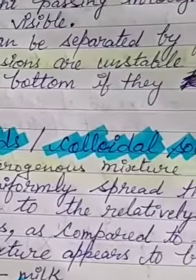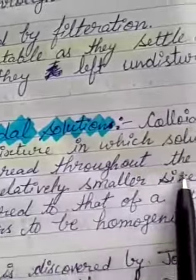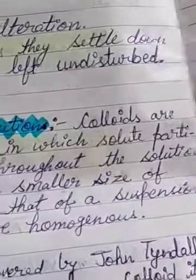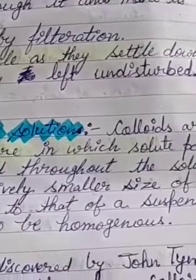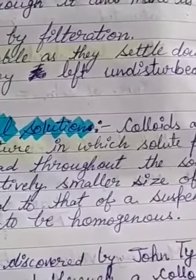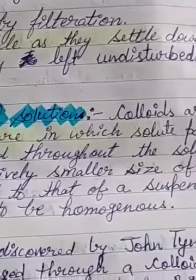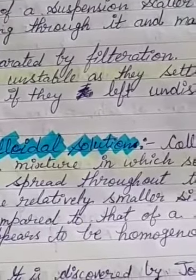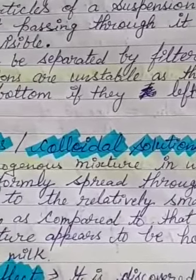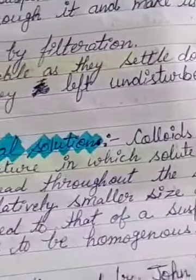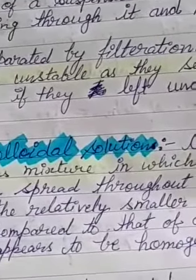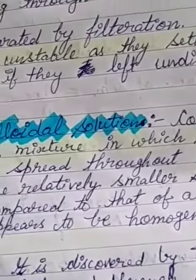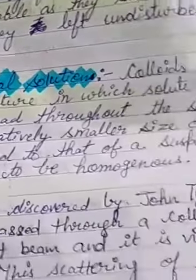The particles are uniformly spread throughout the solution. For example, milk. As I told you in my first video, milk is a mixture — a mixture of water, fat, sugar, and proteins. But it looks the same throughout the solution. If you take a glass of milk, the whole milk appears the same. Why? Because the particles of all the solutes are uniformly spread throughout the solution, and the size of those particles is very small. Such types of solutions are known as colloids or colloidal solutions.